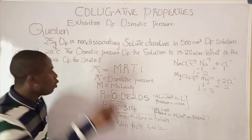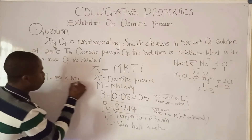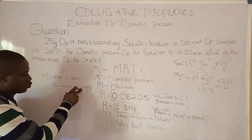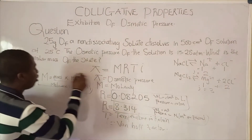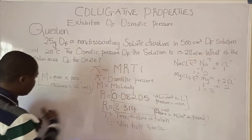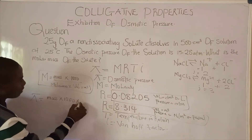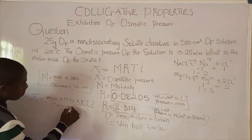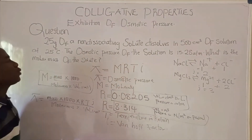Recall the formula for Molarity: Molarity equals mass times 1000 over molar mass of the solute times volume in cm³. We use 1000 here to convert the volume from cm³ to dm³ or liters. Substituting into the osmotic pressure formula, osmotic pressure Pi equals mass × 1000 × R × T × i over molar mass × volume. This is how osmotic pressure of a solute is calculated.